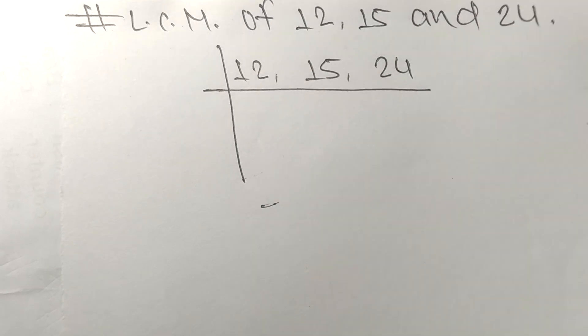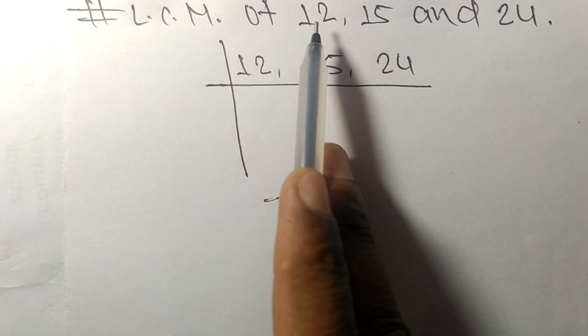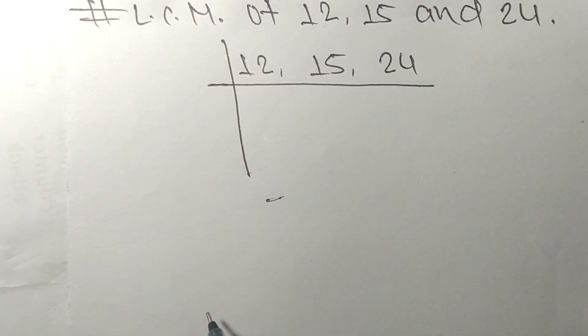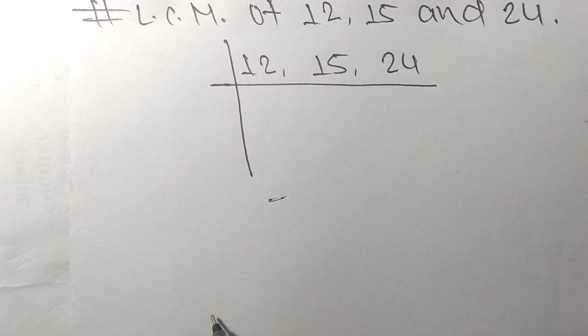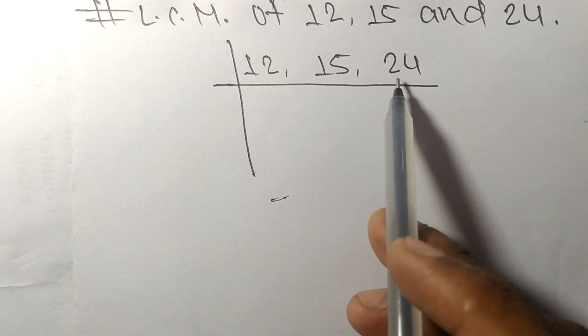So today in this video we shall learn to find the LCM of 12, 15, and 24. To find the LCM, we have to choose the lowest number that can exactly divide at least any two of these numbers.